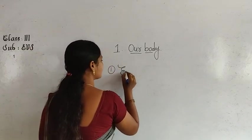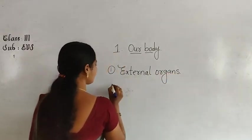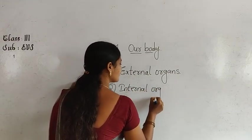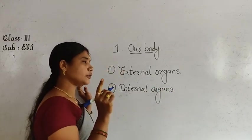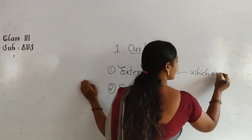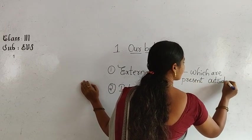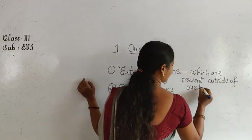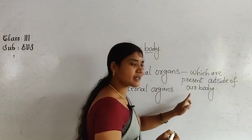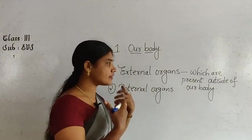The first type is external organs. The second one is internal organs. External organs means the organs which are present outside of our body. Those are called external organs. We can see it, we can feel it, we can touch it.